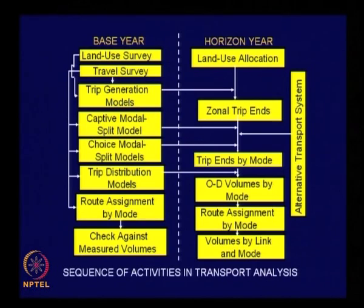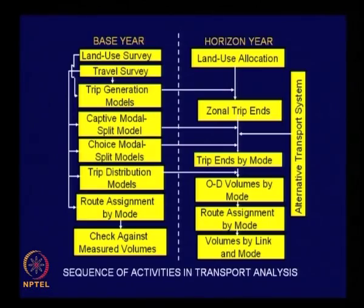Look at the left hand side — we have completed our discussion on all aspects listed on the left hand side of the flow chart pertaining to base year condition. This implies that as planners, we are ready with the calibrated models to be used to predict the horizon year travel pattern. Once you go through the process listed in all the boxes on the left hand side, you would be ready with the models for trip generation, mode choice, trip distribution and route assignment — calibrated and ready for use models for horizon year condition.